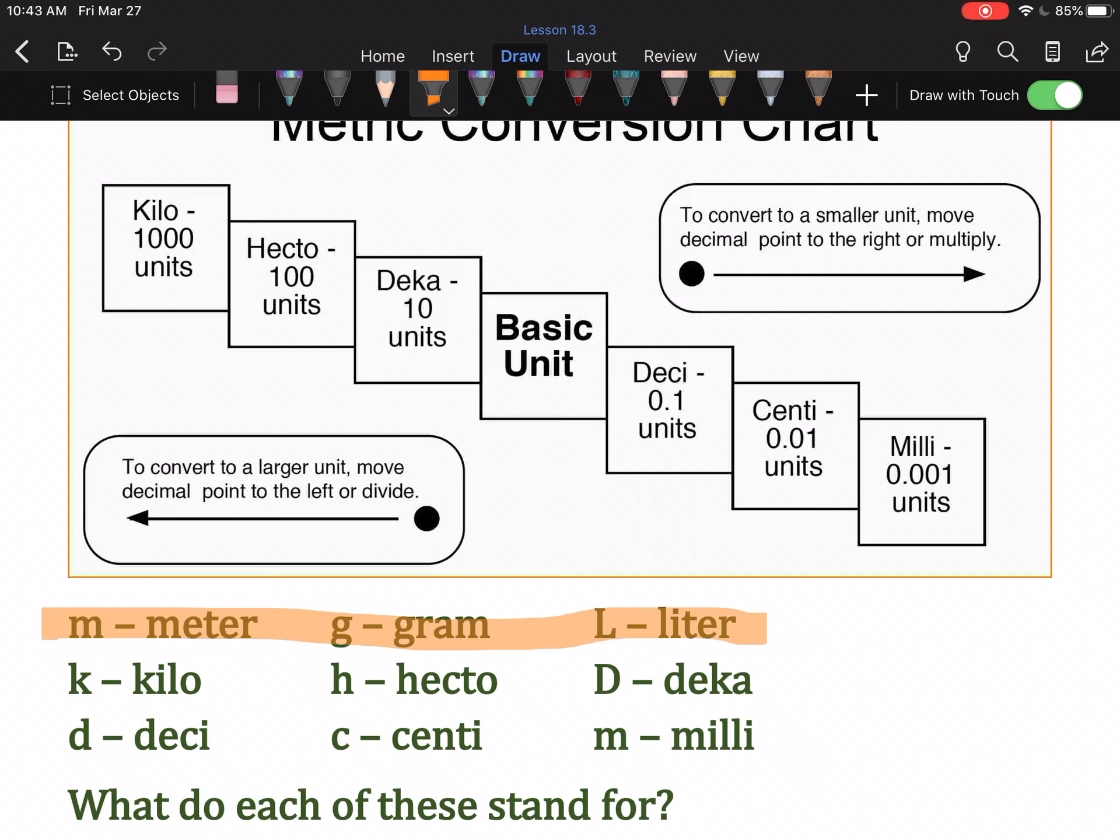Now, the prefixes. So, kilo has the prefix as a letter. It's K. So, KM is kilometer. We usually say kilometer. KG is kilogram. And KL is kiloliter.